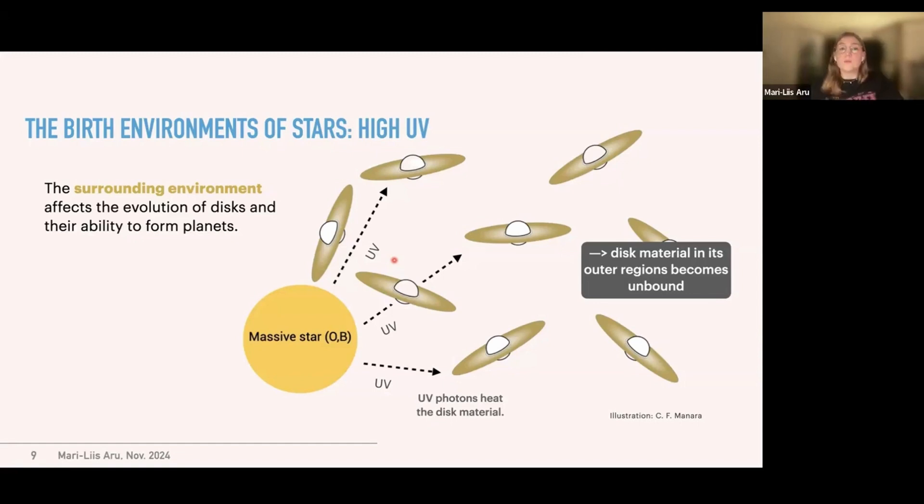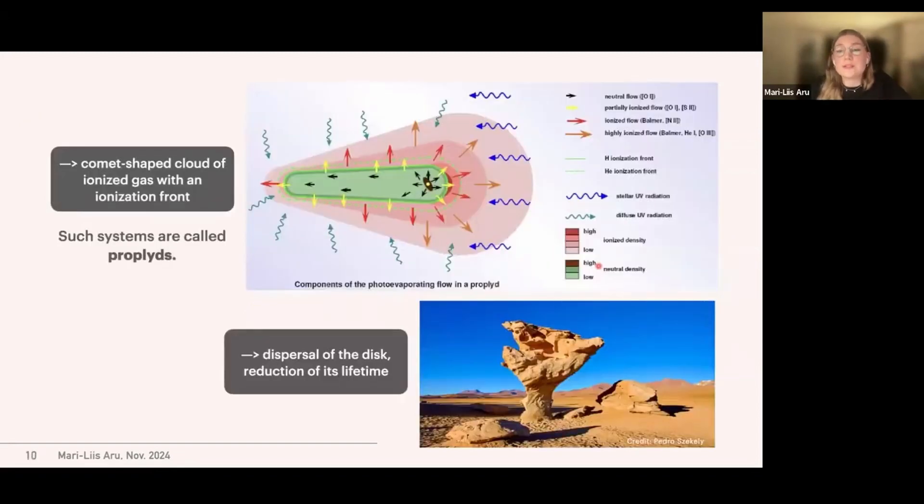The surrounding environment is important to be studied because it affects the evolution of the disks and in turn their ability to form planets. So when we have these high UV environments with massive stars, so O and B type stars present, the UV photons heat the disk material. And in turn, the disk material in these outer regions of the disks become unbound. In turn, there is this comet shaped cloud of ionized gas with an ionization front that surrounds this central disk that is marked with this brown color in here. And these systems are called proplyds.